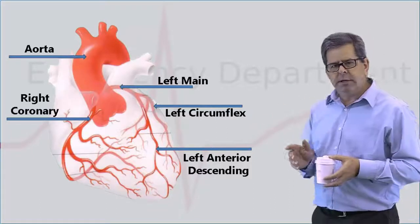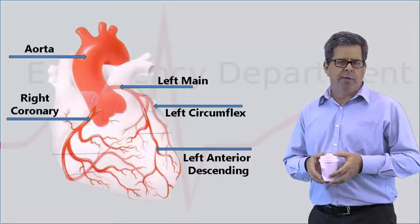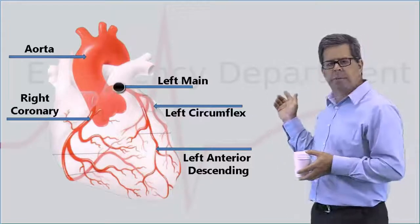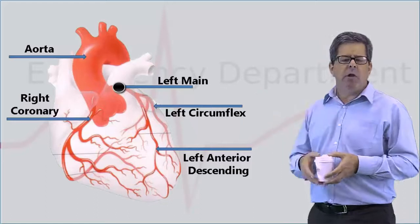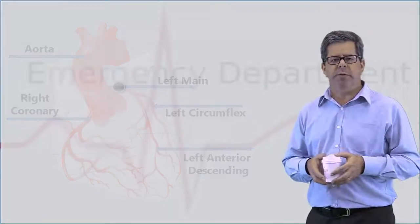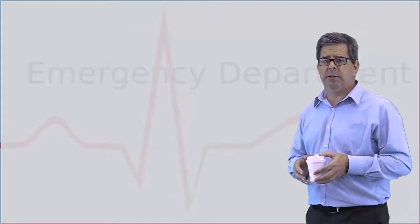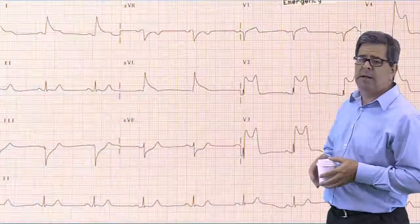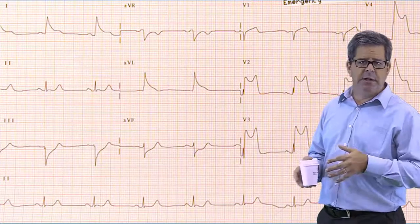If you obstruct at the level of the left coronary like this, then you've got a lot of the myocardial left ventricle that's been affected, and your ECG looks like this. It's pretty ugly. ST elevation anteriorly, laterally.